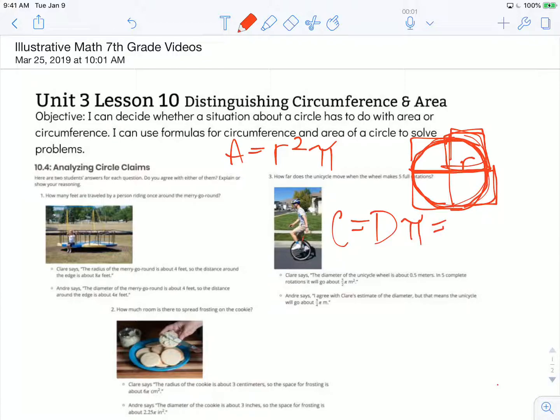And we remember that diameter is the same thing as 2 radii. So we can also do 2 radius pi, 2 times radius times pi, or 2πr, as well for our circumference.